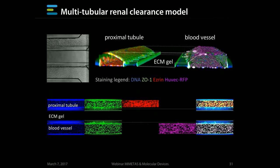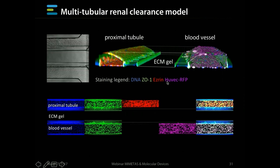This is a co-culture model of two tubules: on one side a blood vessel made of endothelial cells, and on the other side a kidney proximal tubule made up of PTEC cells developed by Sigma-Aldrich. In the middle is an empty extracellular matrix gel. A variety of stains are used to characterize these cells — the proximal tubule is stained with Ezrin, and the blood vessel is stained with RFP by stable introduction of RFP expression into the endothelial cells.